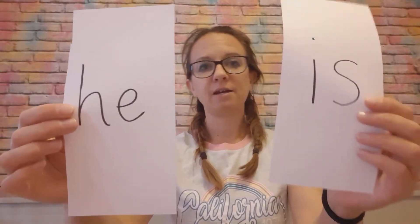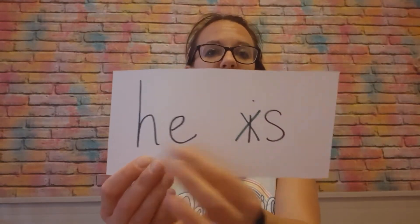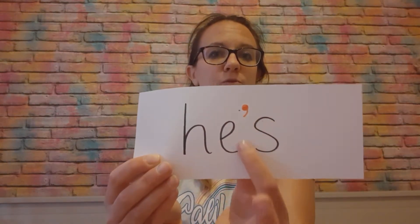We might then talk about somebody else. We might say 'he is outside'. So instead of saying 'he is' as two words, they can be shortened and combined — we take away the 'i' of 'is'. So 'he is' becomes 'he's'. If you see this written with the apostrophe, that apostrophe is replacing the 'i' of 'is'. So he's means he is.